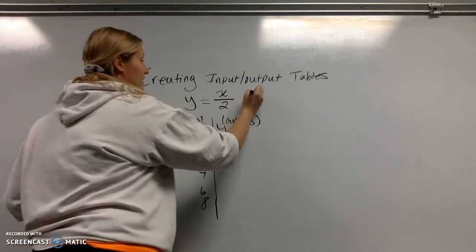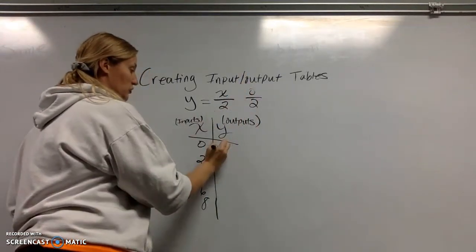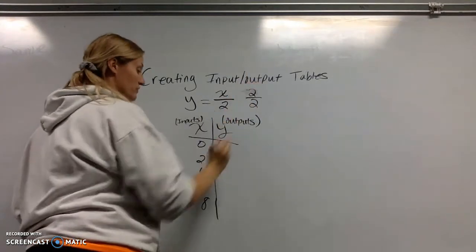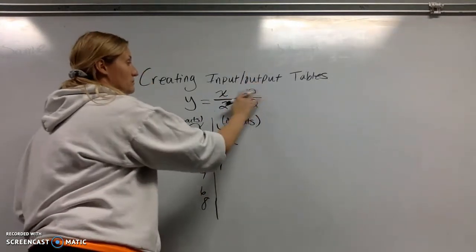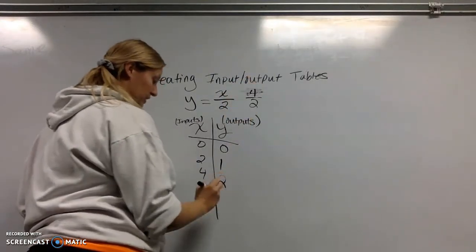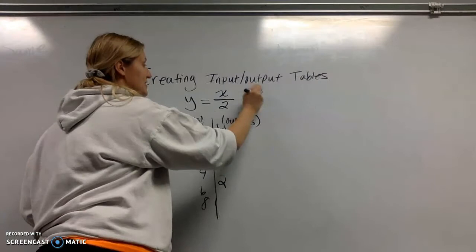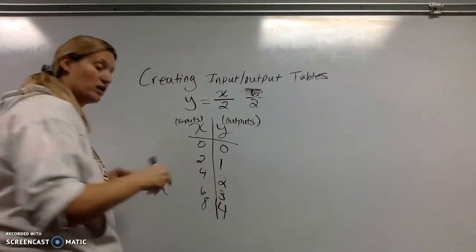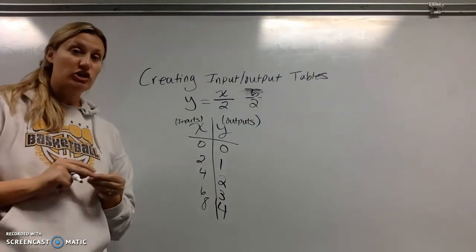So now I can plug in 0 divided by 2 is 0. Now I plug 2 in for X. 2 divided by 2 is 1. Now I plug 4 in. 4 divided by 2 is 2. Plug 6 in. 6 divided by 2 is 3. 8 divided by 2 is 4. And I am done. It is that simple to create an X and Y chart.